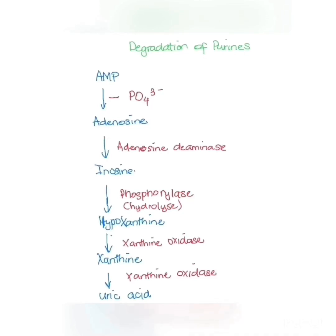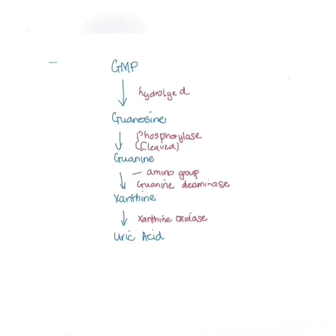Let's move on to GMP. GMP is hydrolyzed first to produce guanosine, and this in the presence of phosphorylase is cleaved to produce guanine. Guanine loses an amino group in the presence of guanine deaminase to form xanthine. Xanthine is oxidized to form uric acid.